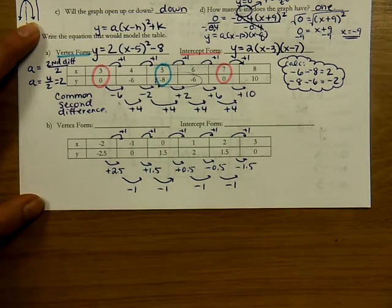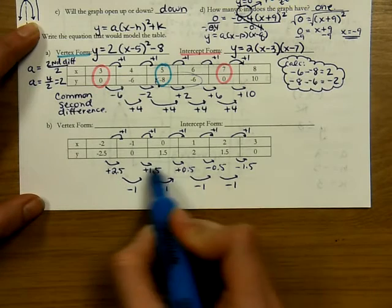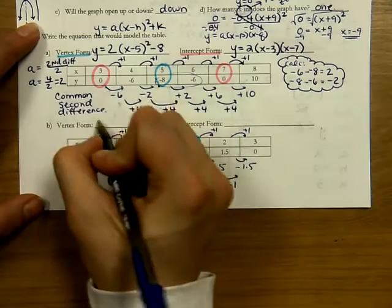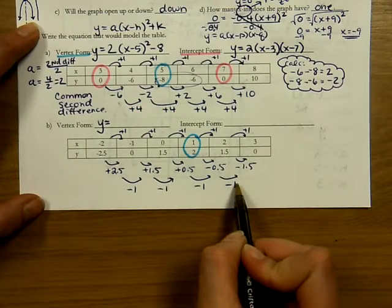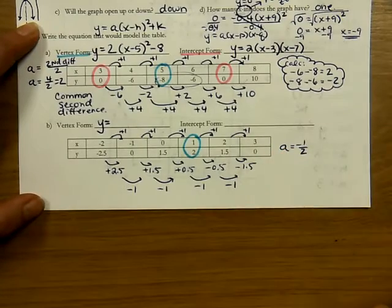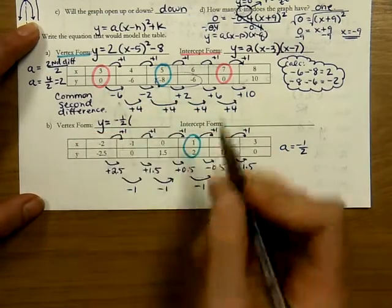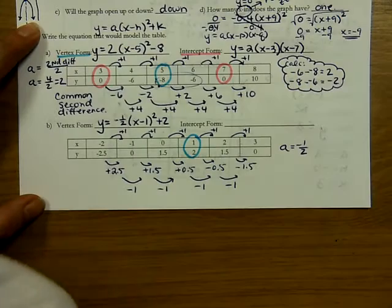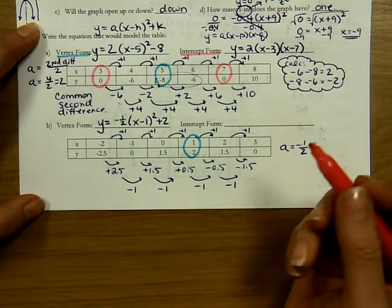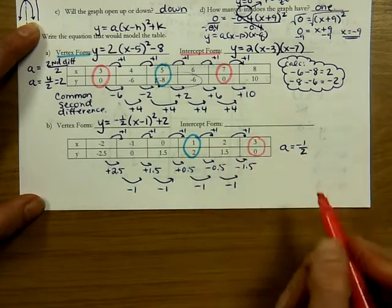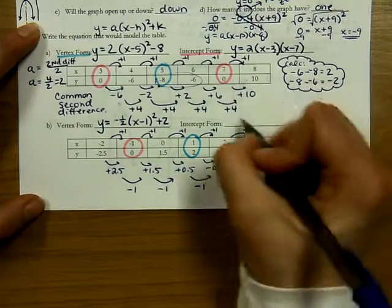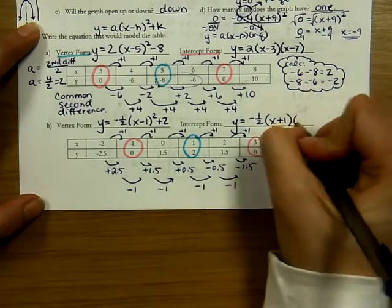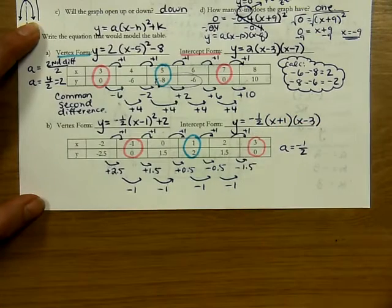For vertex form, the vertex is where it changes from increasing to decreasing. The a value is negative 1 divided by 2, which is negative 0.5. The vertex is at 1 comma 2, so the equation is y equals negative 0.5 times x minus 1 squared plus 2. For intercept form, I look for where y equals 0 in the table: x equals 3 and x equals negative 1 are the x-intercepts. So the intercept form is y equals negative 0.5 times x plus 1 times x minus 3.